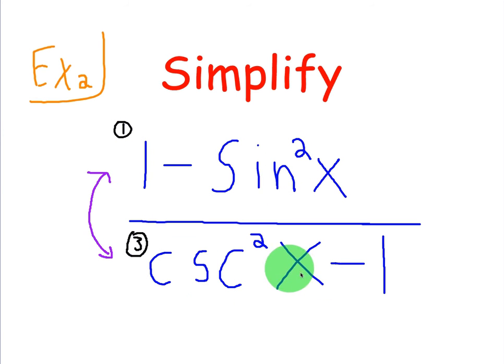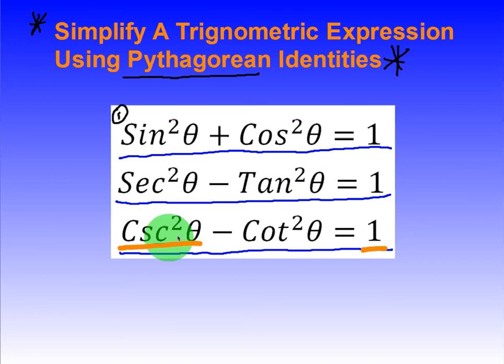The bottom is cosecant squared of x minus 1. That looks a whole lot like the third identity, namely cosecant squared minus cotangent squared equals 1. The only thing that's missing is cotangent squared. Hopefully we can rearrange this so that we can replace it with something simpler.